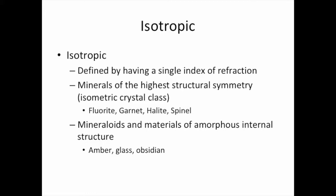However, there is a caveat to isotropic materials displaying isotropic behavior all the time. If you have a stress field in an isotropic material, it will cause it in some instances not to behave isotropically. Tempered glass is the most common example of this, and in fact polariscopes can be used to visualize the stress within a piece of tempered glass.